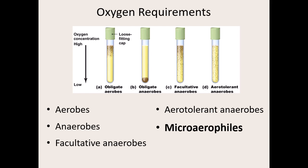Microaerophiles — 'micro' means small, 'aer' means oxygen, 'phil' means like — these organisms like small amounts of oxygen. They require oxygen, but grow best when there isn't a lot of it. So where in the tube would they be found? Right in the middle. They don't grow with lots of oxygen, but they don't grow with none either. We'll work with a few microaerophilic bacteria this semester in lab, and we'll reduce oxygen in the environment to help them grow.